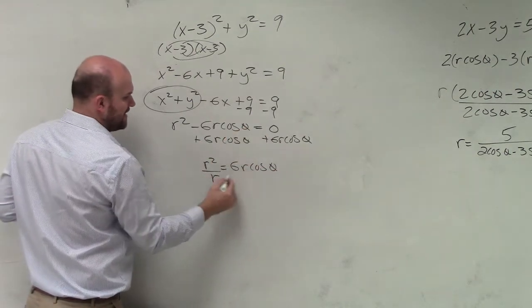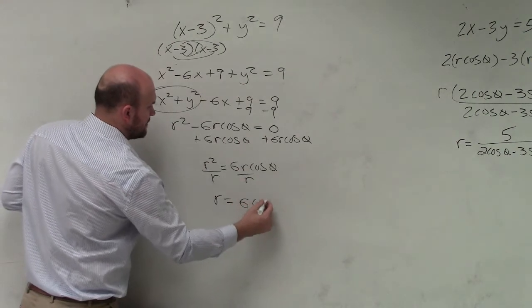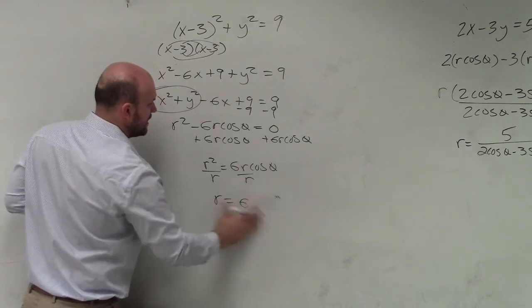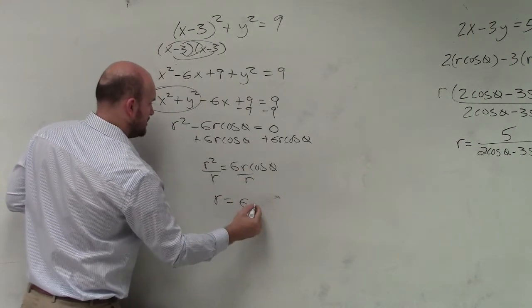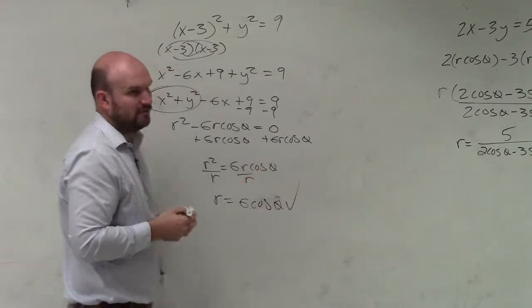I'll accept it as that. But if you divided a r on both sides, you'd have r equals 6 cosine of theta. That'd be fully simplified.